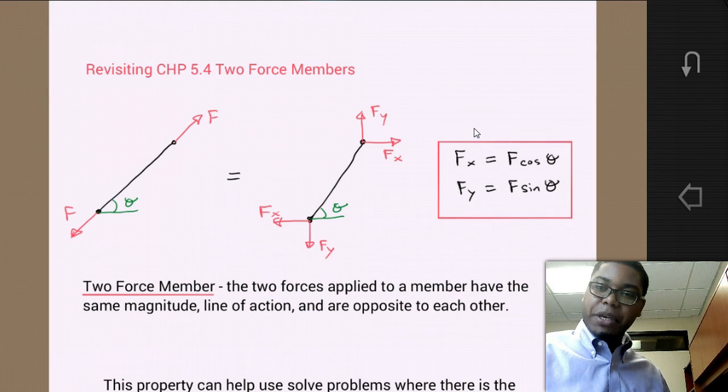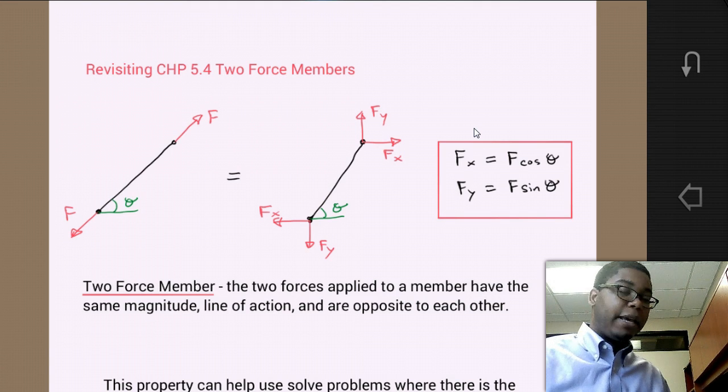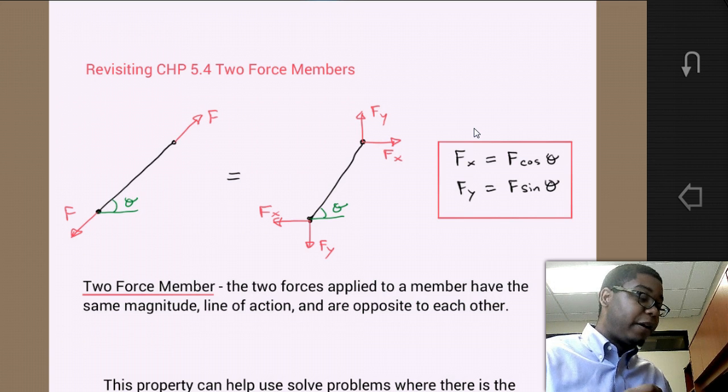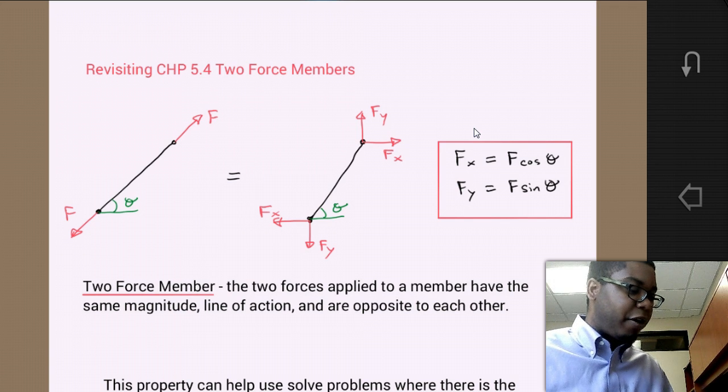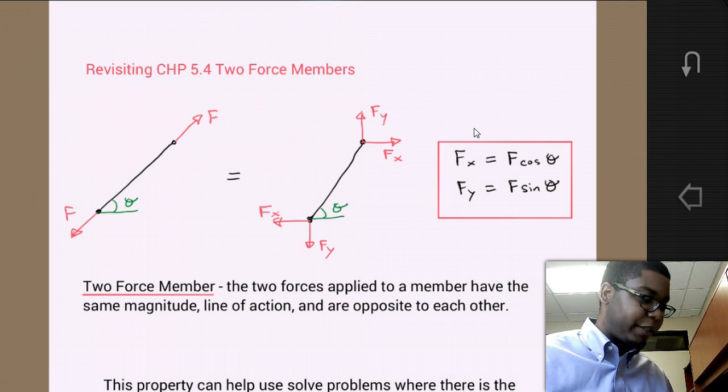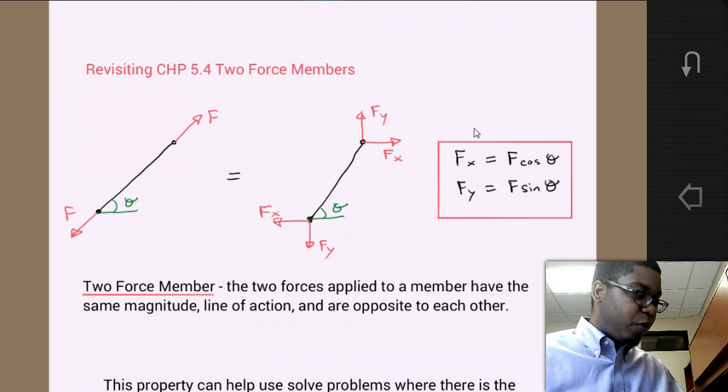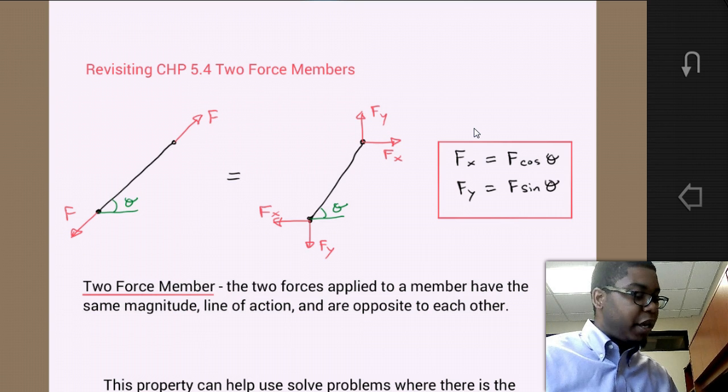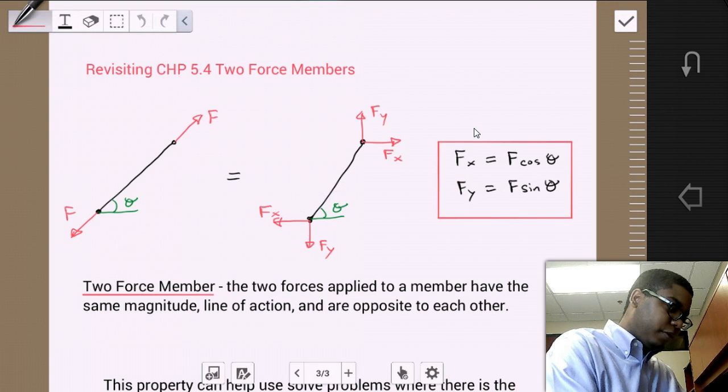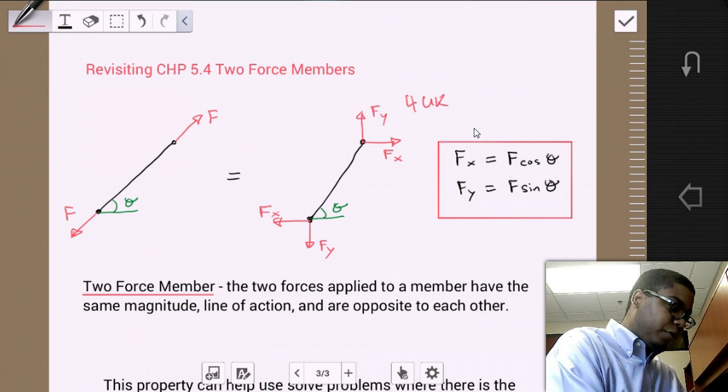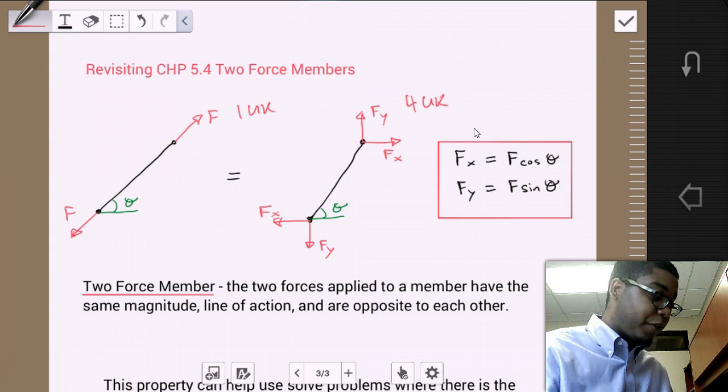So as mentioned in this section, it talks about two force members. And if we revisit chapter 5.4, chapter 5.4 was all about two force members, where a two force member is a member where the two forces applied to a member have the same magnitude line of action and are opposite to each other. So if we have some member that we can decompose into x and y components, and it's a rigid straight member that's pin connected, we know that it's going to be equivalent to a force that goes through the line of action of that member. So we can go very quickly from having four unknowns to a problem that has one unknown by very quickly identifying the two force members.